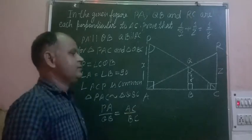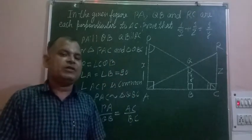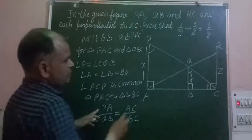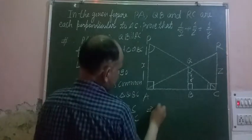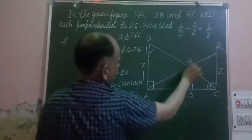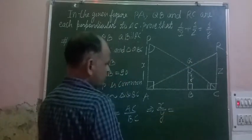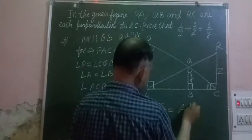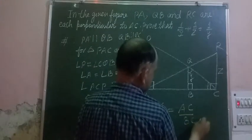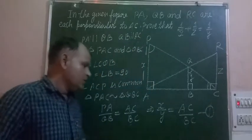Since similar triangles have the same ratio of respective sides, we write PA over QB equals AC over BC. PA is x here and QB is y here, so x over y equals AC over BC. This is our first equation.